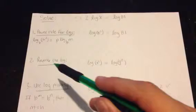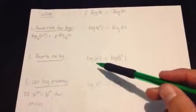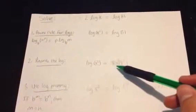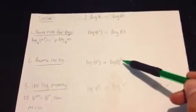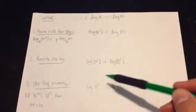Rewrite the log in your second step so that your log of x squared is equal to log of 9 squared. And you'll see why in the third step.